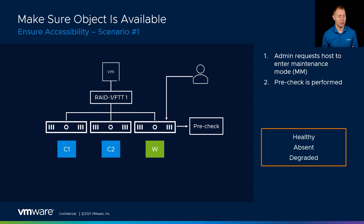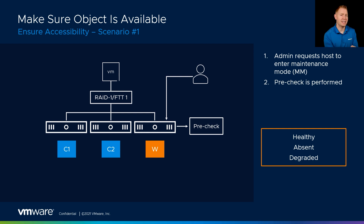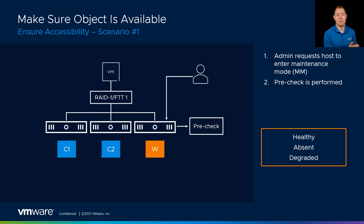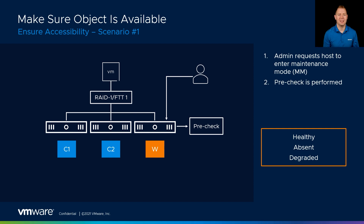Let's talk about the different object states. We've got healthy, which means everything is compliant with our storage policy and we can access it. We have absent — absent is the state that a component just went into, and that's true for a data component or a witness component. Absent says this component has gone away and vSAN is hoping that it comes back. We then have degraded. Degraded is when something died in the environment out of our control — a disk that died. Something failed and notified vSAN, so all the components on that disk have now failed. Those are our three object states.